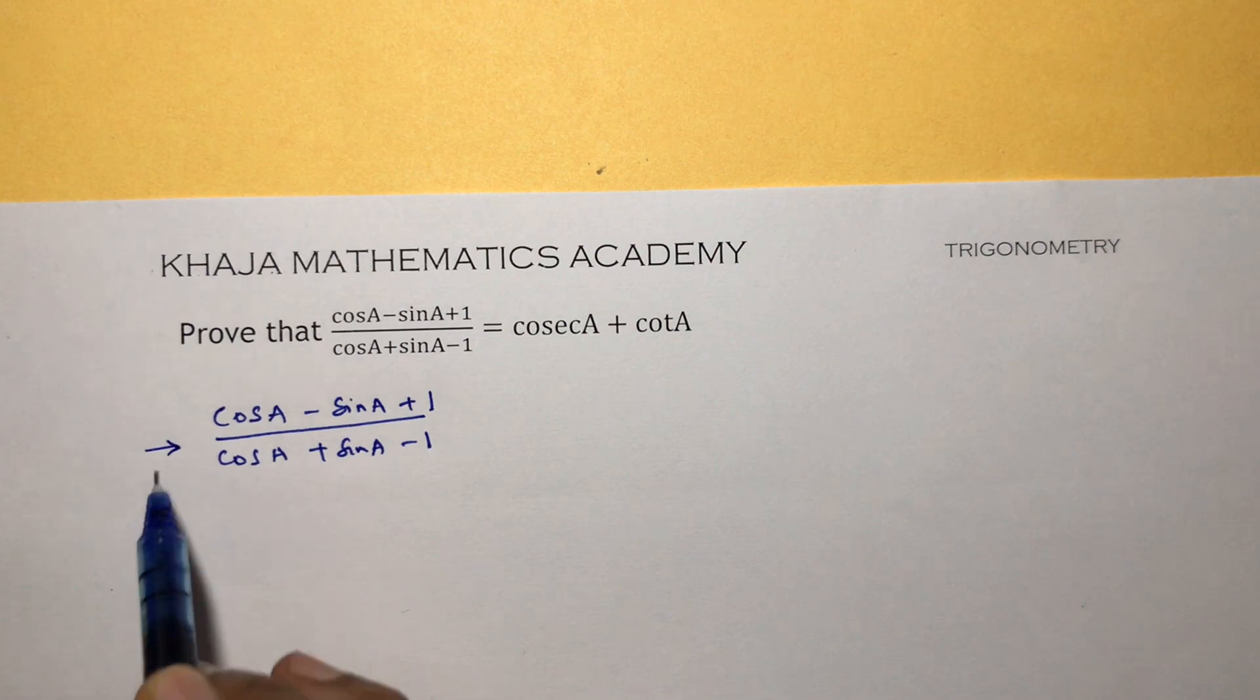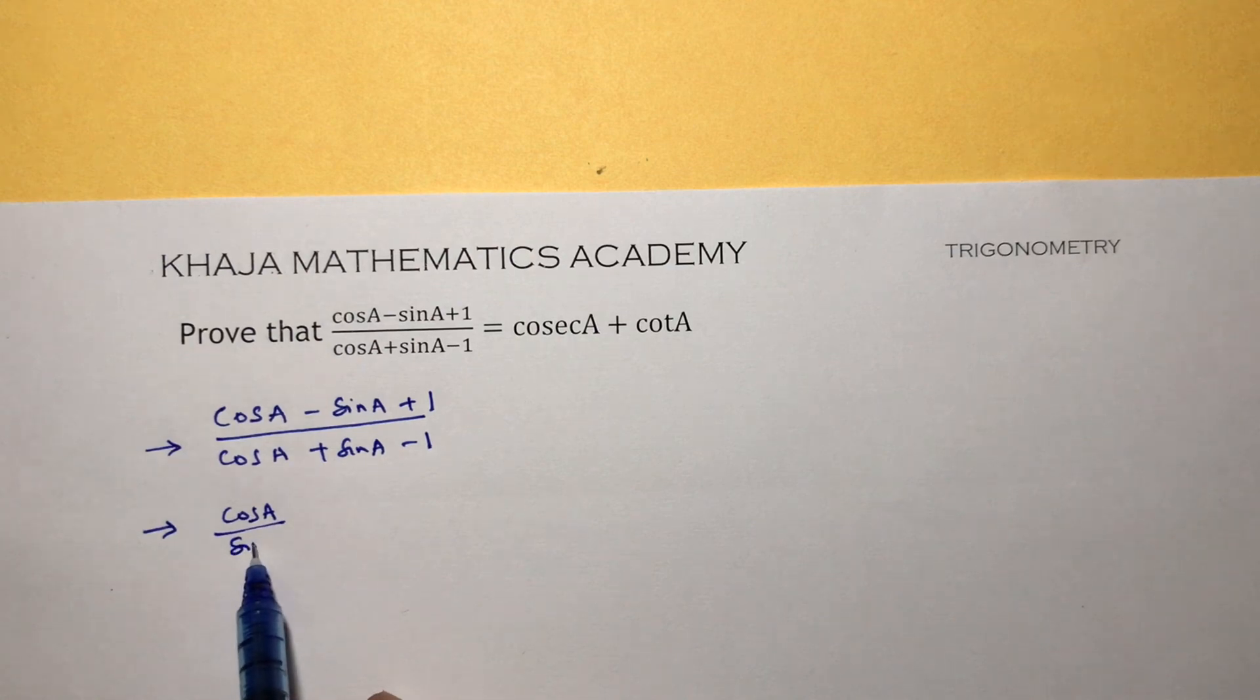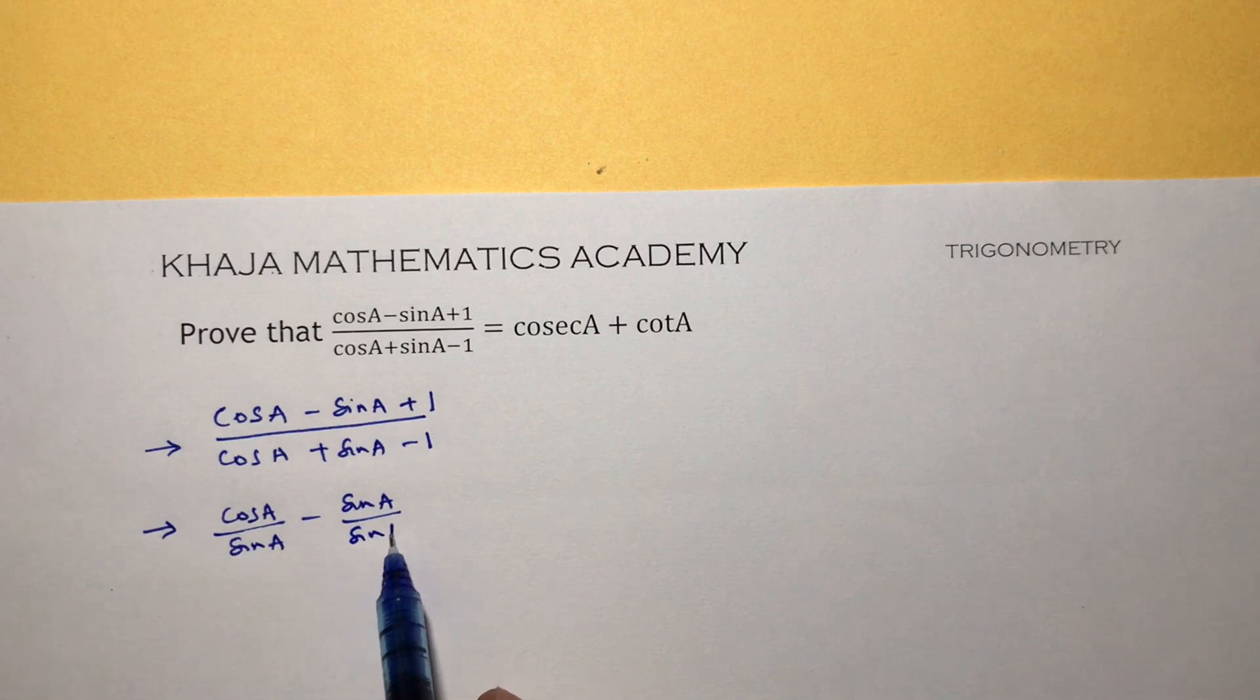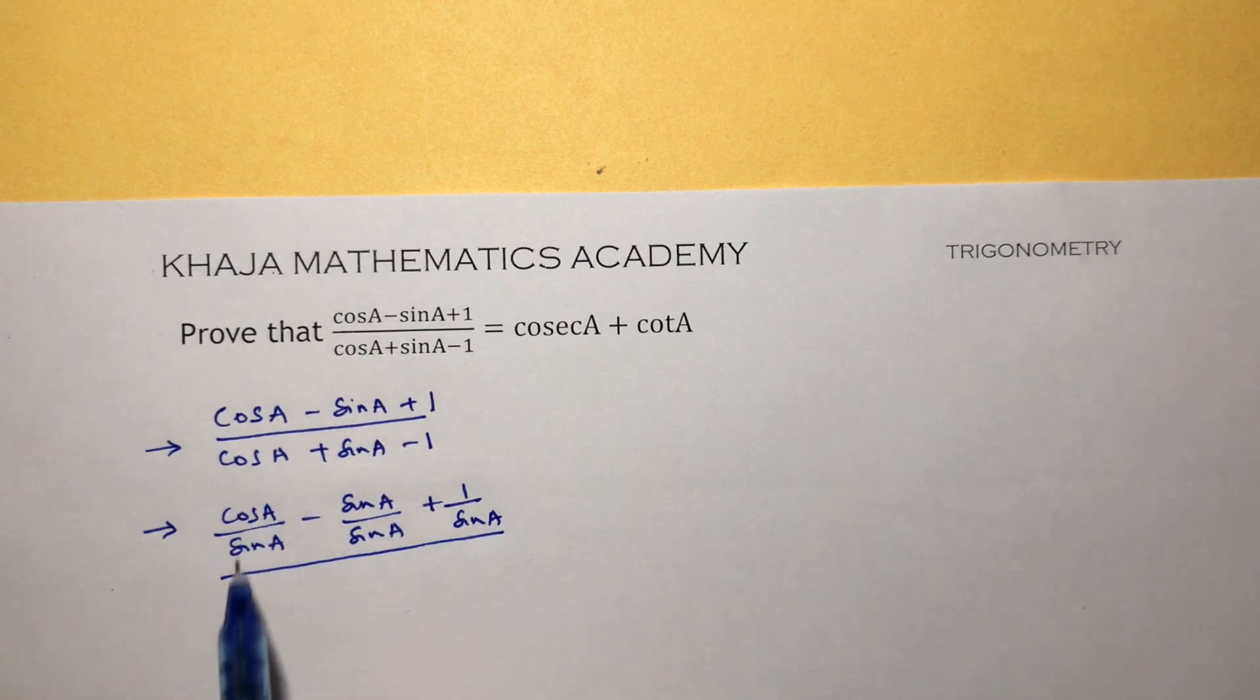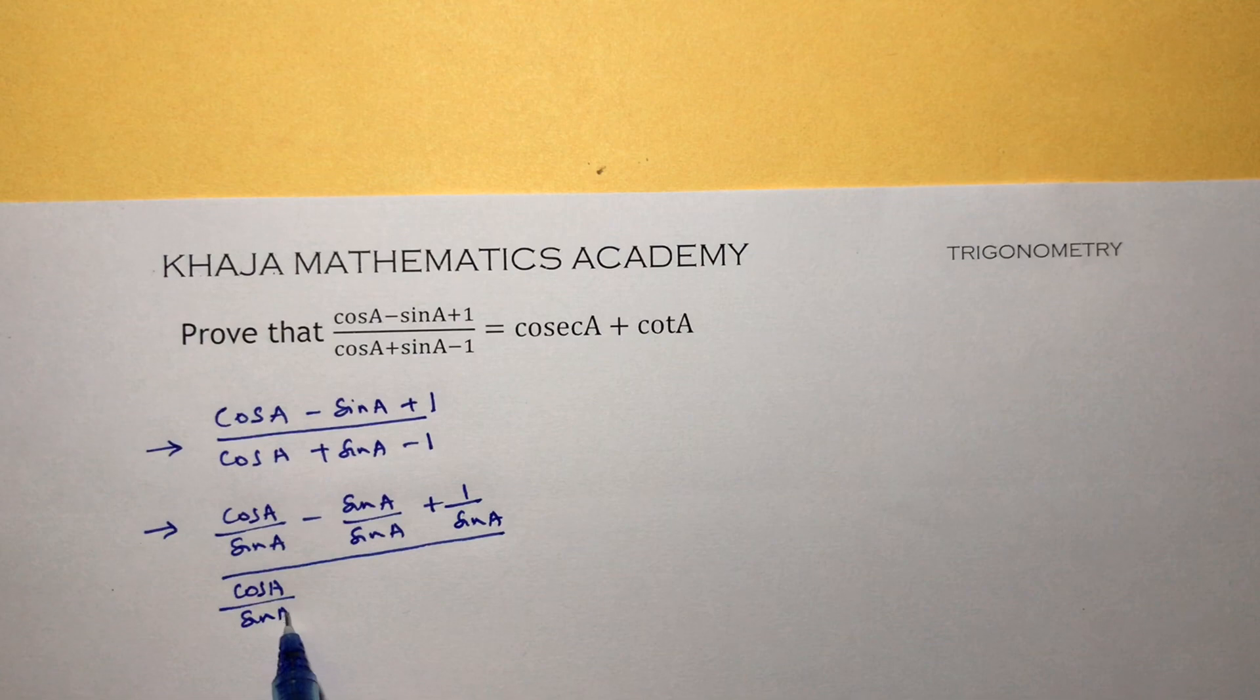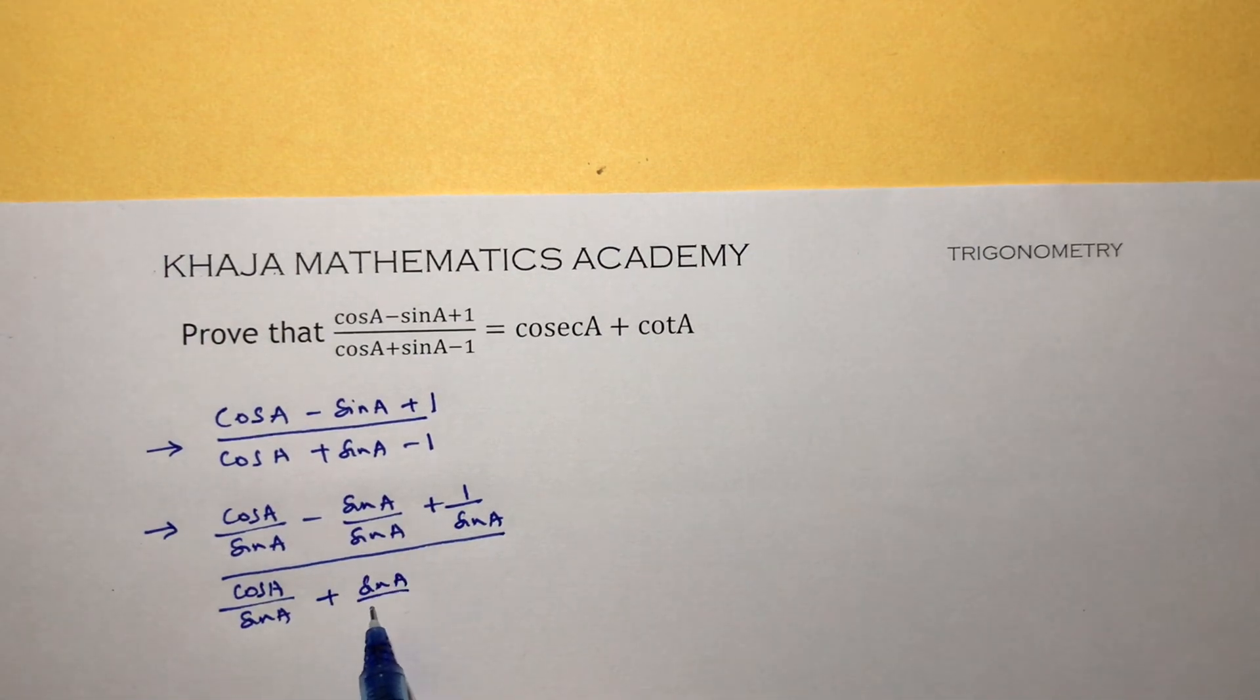So here, cos A by sin A minus sin A by sin A plus 1 by sin A, divided by cos A by sin A plus sin A by sin A minus 1 by sin A.